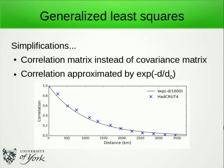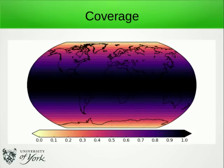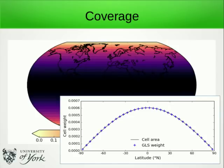If we use the correlation matrix in the generalized least squares equations, we get a set of weights for the observations. In the simplest case of spatially complete coverage, observations near the equator receive greater weight than observations at the poles, which is expected given that cells have larger areas there. In fact, the GLS weights agree exactly with the cell areas — generalized least squares has reproduced area weighting without being told the areas of the cells.